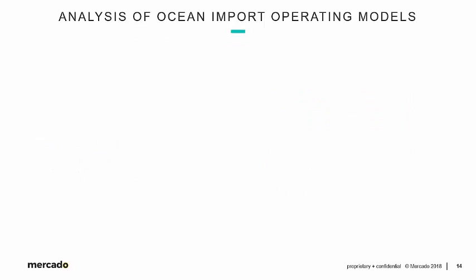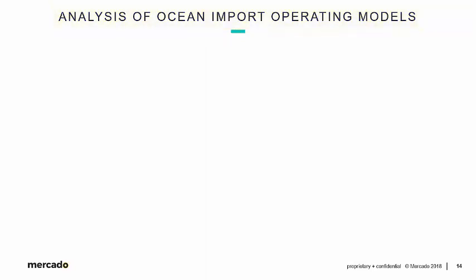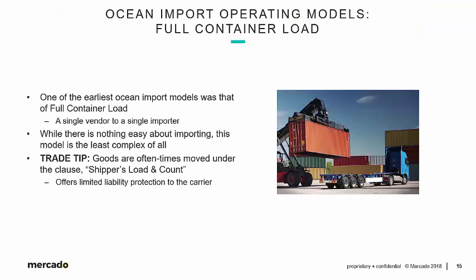Based on that introduction, let's start analyzing some ocean import operating models. The first we're going to look at could be considered the most basic: full container load, FCL. One of the earliest ocean import models, FCL involves a single vendor producing in quantities sufficient to fill a container, sending goods to a single importer. This model is the least complex of all — single vendor, full container, single import distribution point. It's not easy, but it's easier.